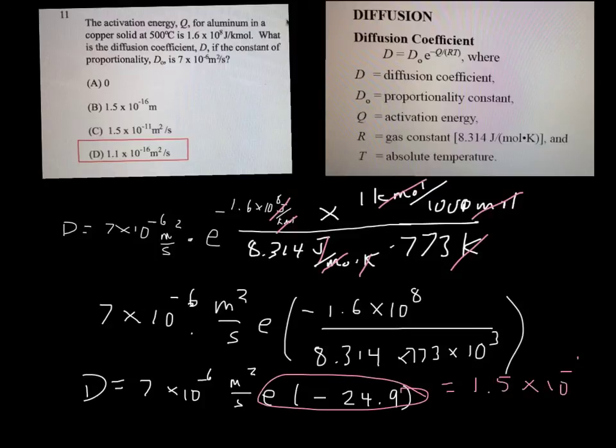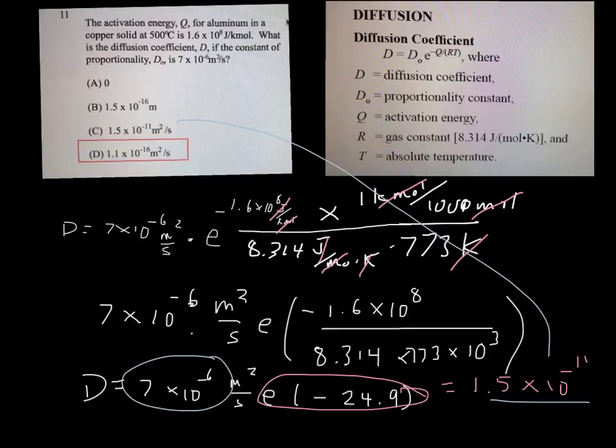What you get if you do this is this term right here is 1.5 times 10⁻¹¹. Notice that that is actually the same value as this value here. Now if you multiply this term by this term you actually end up getting 1.1 times 10⁻¹⁶.